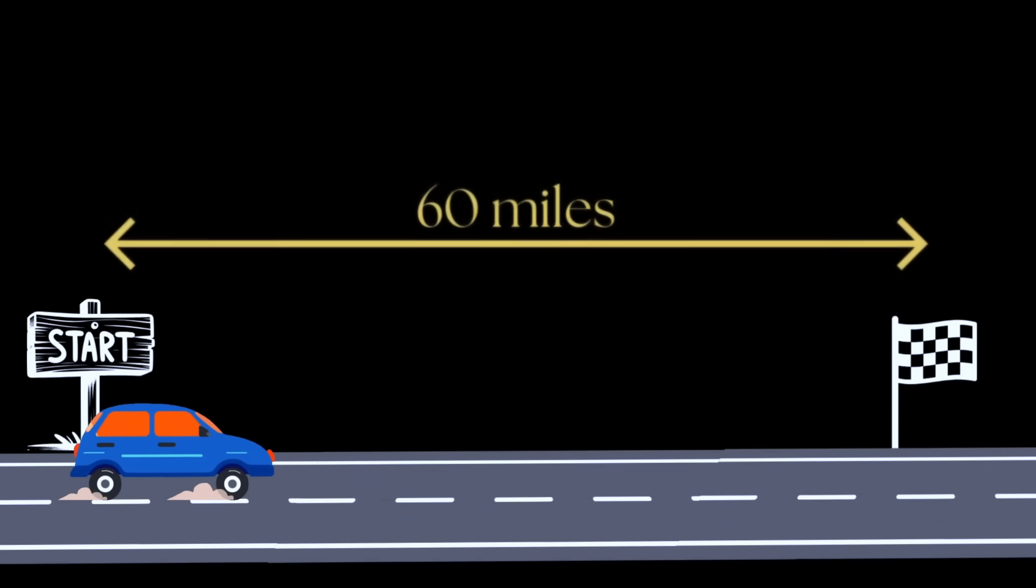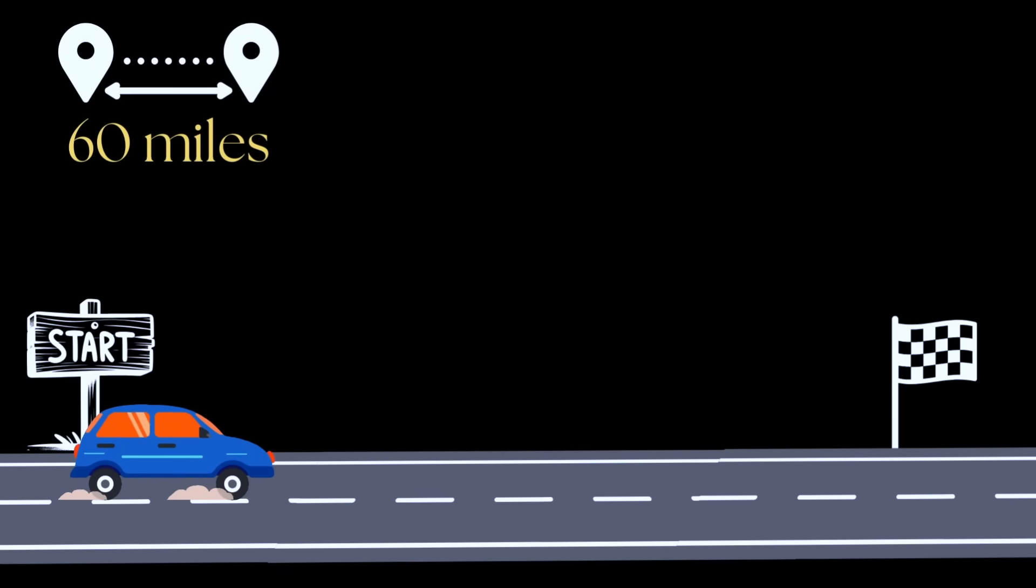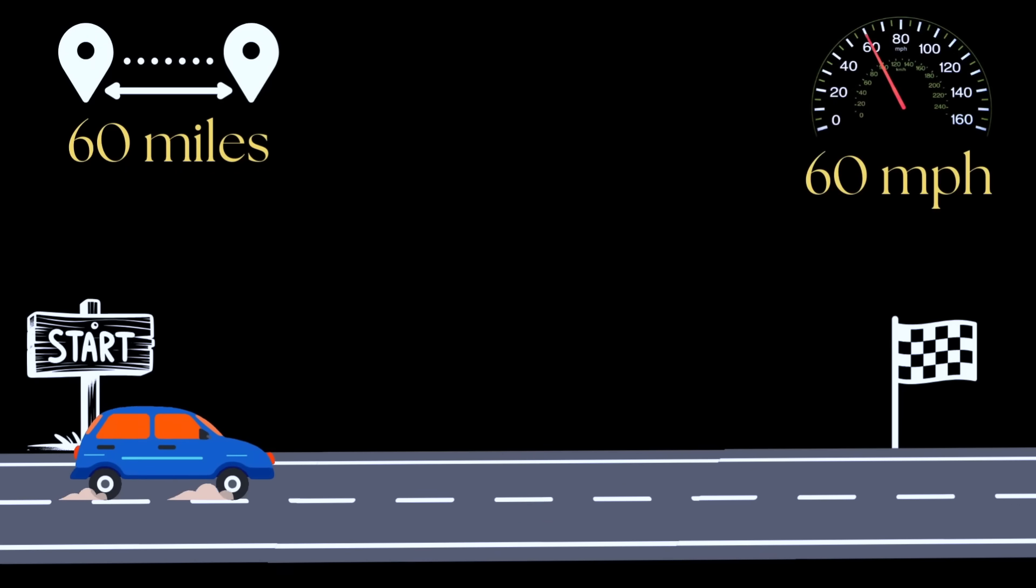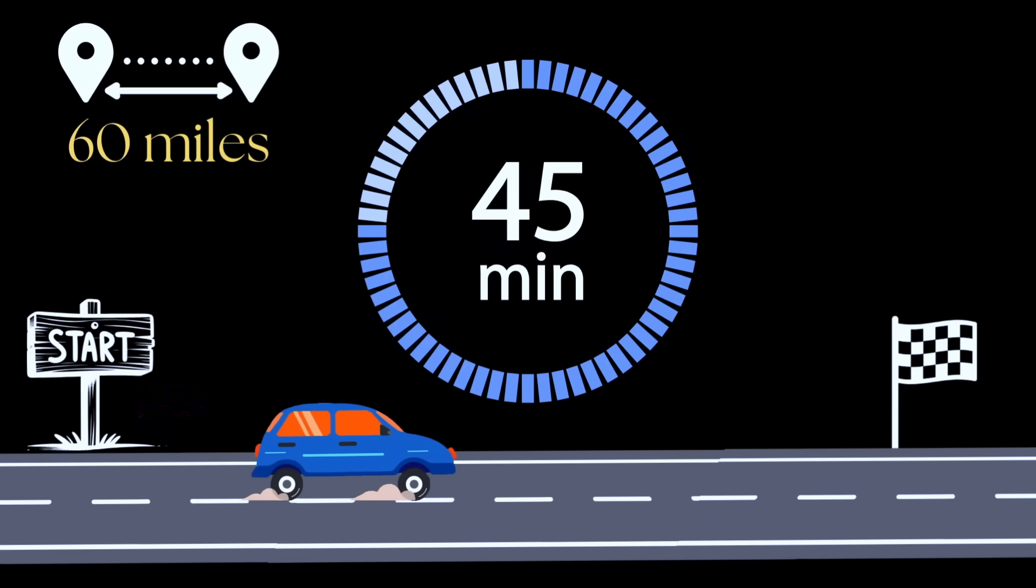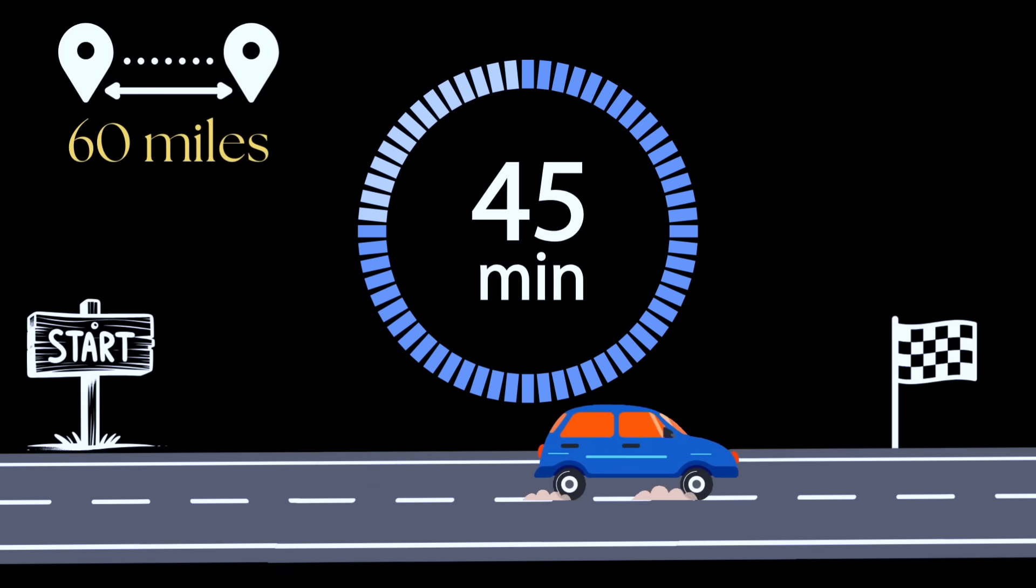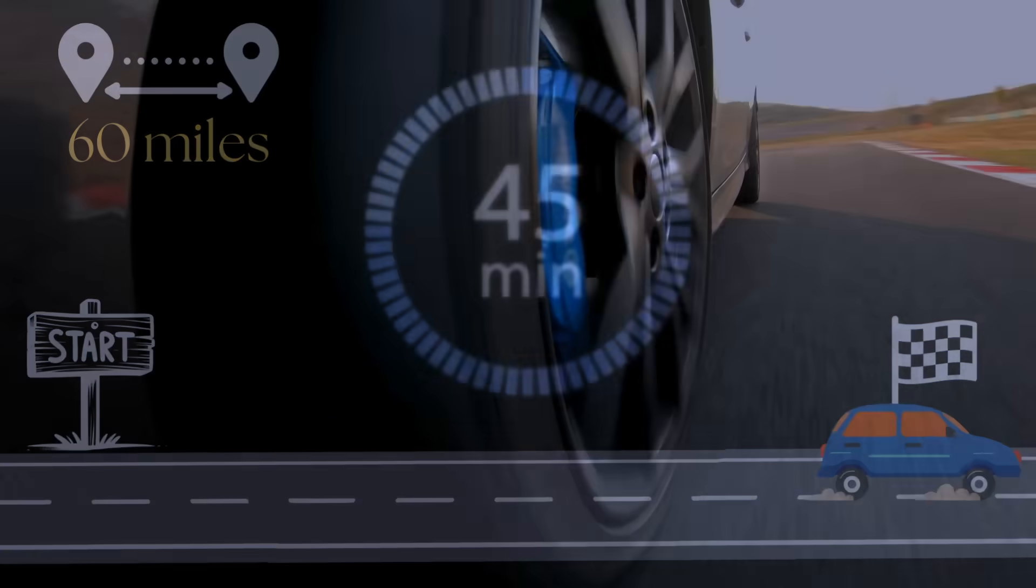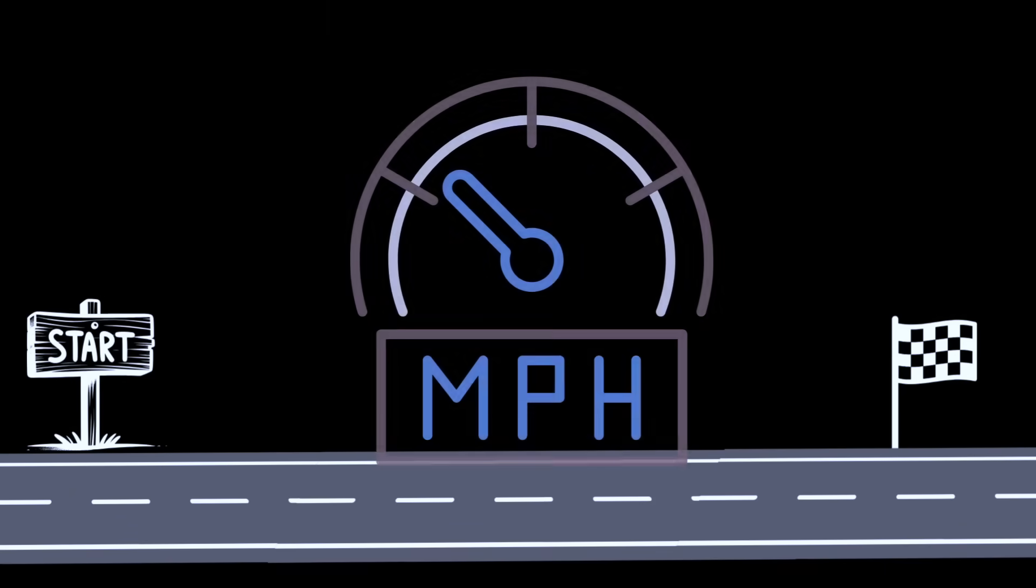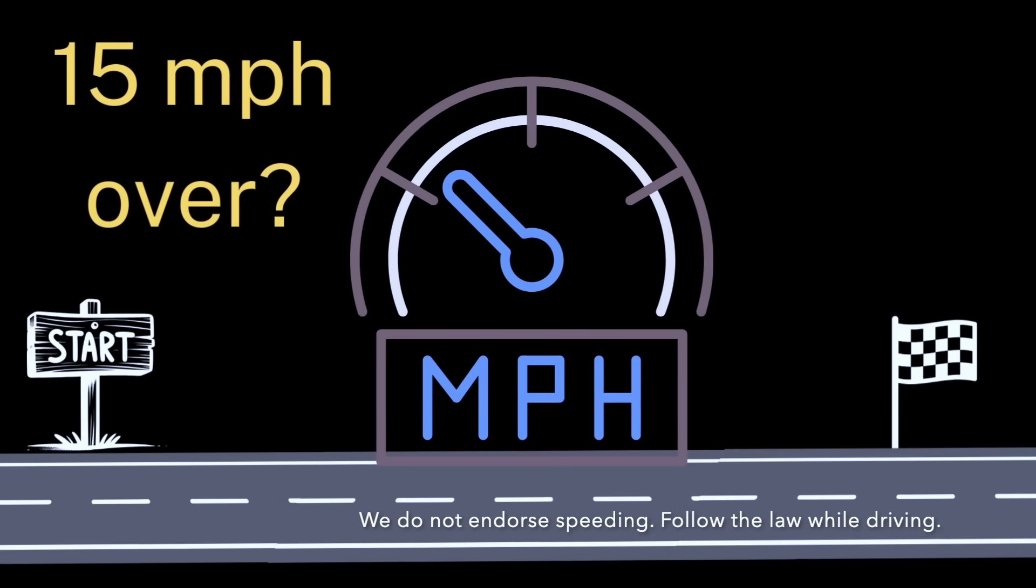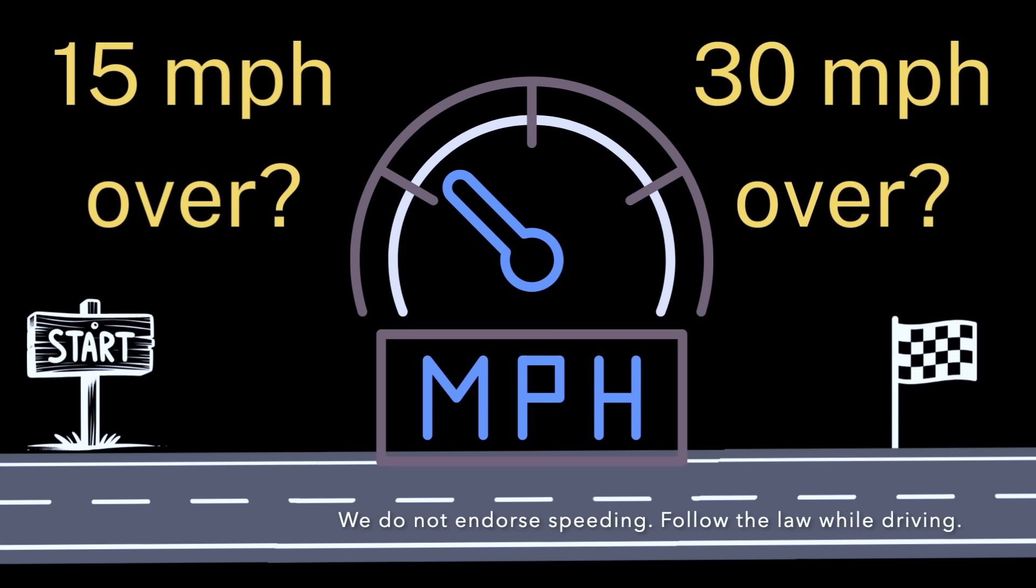Let's say you were on a 60-mile trip and the speed limit is 60 miles per hour. At that speed, you would reach your destination in exactly one hour. But what if you need to get there in just 45 minutes? How much faster do you need to drive? Would you need 15 miles per hour over the limit? Or maybe 30 over the limit? Or something in between? Take a guess.